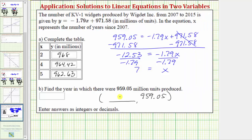So the ordered pair would be seven comma 959.05. But the question asked in what year. Because x equals seven and x represents the number of years since 2007, this equals 2014. So in the year 2014, the company produced 959.05 million units.